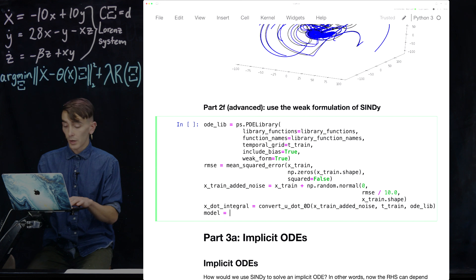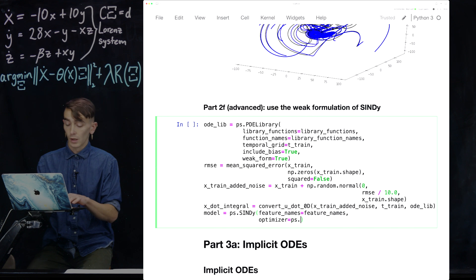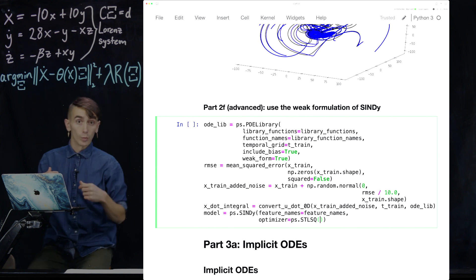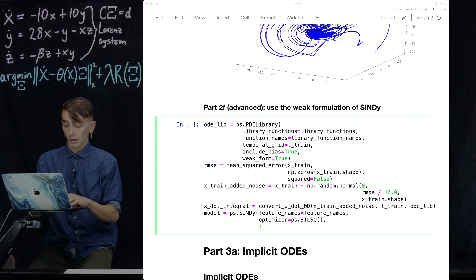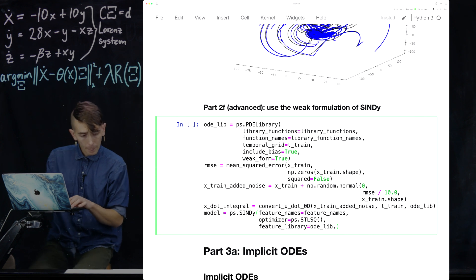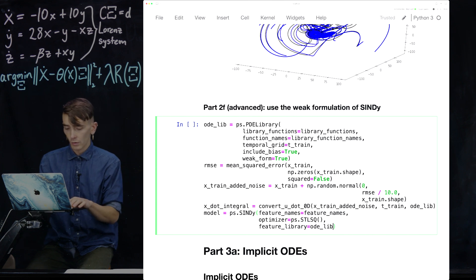We're gonna then define our model, as usual. Pass those feature names, X, Y, Z, we've been using for Lorenz. Pass the optimizer, which we're just gonna use simple, sequentially threshold least squares. Once again, the defaults to Lambda of 0.1. And pass the feature library called odelib. Actually, not passing this feature library in. Okay, so at some point, we'll do that.